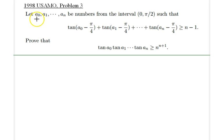We are given n plus 1 numbers in the interval 0 to π over 2. It's also given that these n plus 1 numbers satisfy the following inequality. We would like to go ahead and prove this following product being greater than or equal to this exponential form.